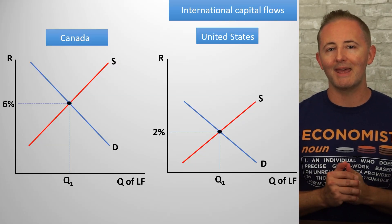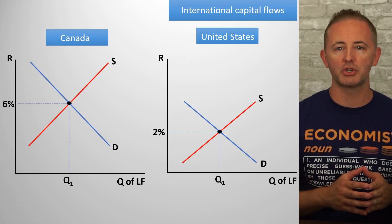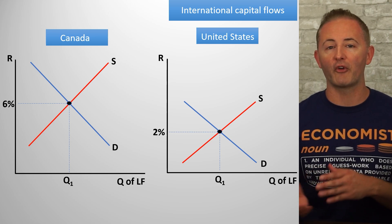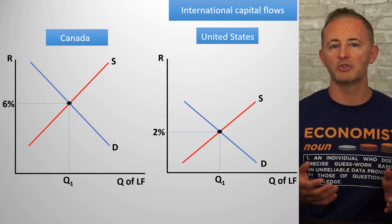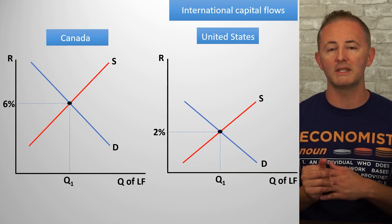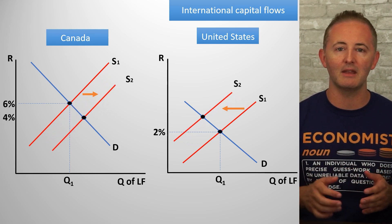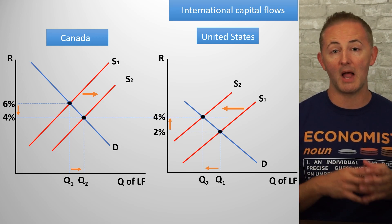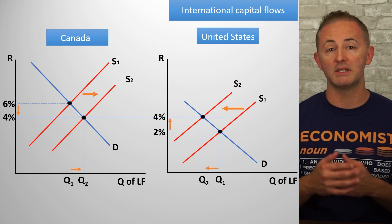Let's say Canada and the United States. Canada has a real interest rate of 6% and it's only 2% in the U.S. In that case, capital will flow from the U.S. to Canada because American savers will be attracted to the higher rate of return their money can earn in Canada, and so they'll choose to save some of their money in Canadian institutions and to buy Canadian bonds. Wouldn't you rather earn 6% than 2%? On our model, we're going to see a rightward shift in the supply of loanable funds in Canada as a result of the capital inflows, and we'll see a leftward shift of the supply of loanable funds in the U.S. since they're experiencing capital outflows.